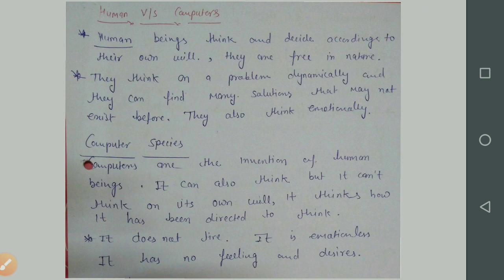And after that, we have a computer or machine and how does it work. So first, human beings think and decide according to their own will. We are free in nature to think and do our work and perform our tasks according to us. They think on a problem dynamically, and they can find many solutions that may not exist before. They also think emotionally.